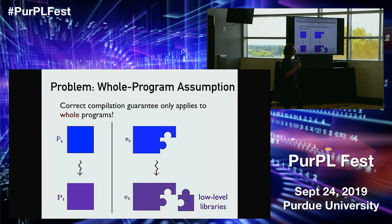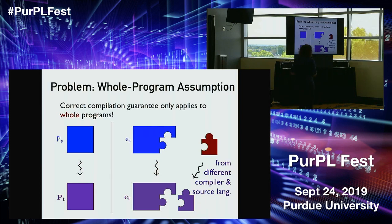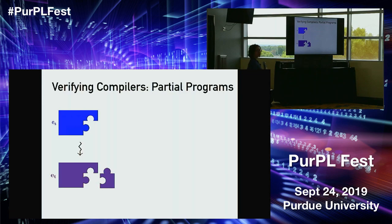We compile fragments and then link them — usually with low-level libraries, something from the runtime, or more generally these days we build a lot of multi-language software. We might write code in a different programming language, compile it down to the target, and then link code from our verified compiler with code from a different compiler. What we don't have is any story for what compiler correctness should mean in that kind of setting — and that's what I want to talk about today.